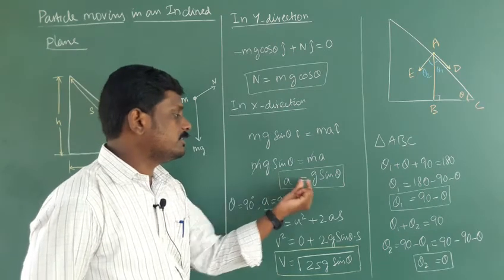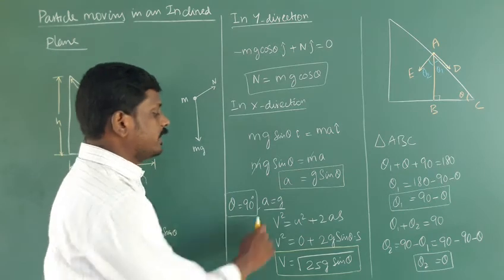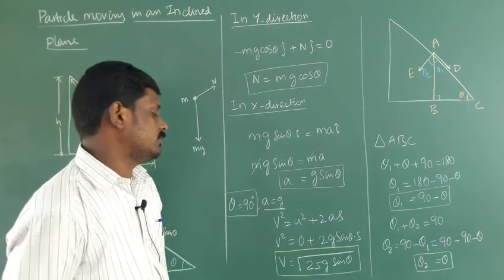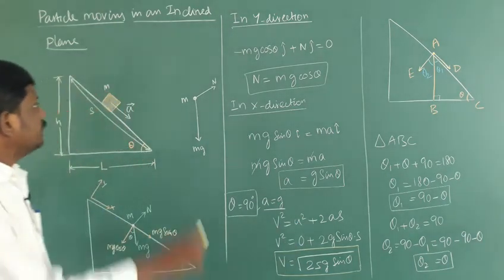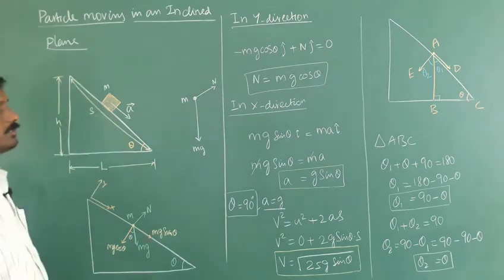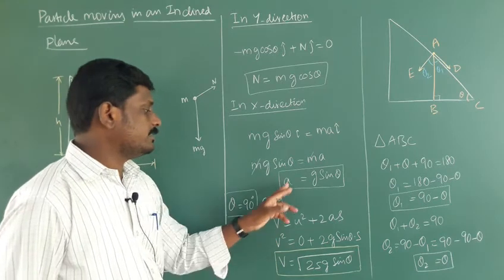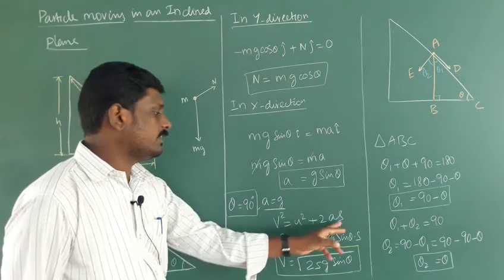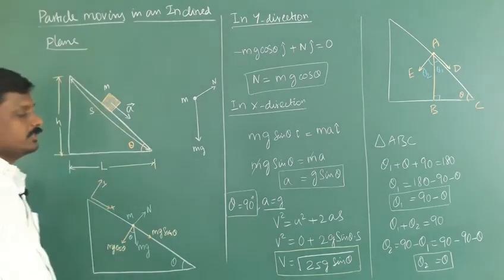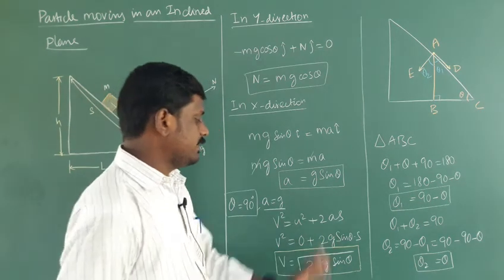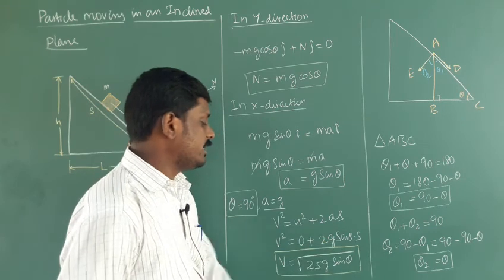If theta equals 90 degrees, then sine 90 equals 1, so a equals g. Using the kinematic equation v squared equals u squared plus 2as, the initial velocity u is zero and a equals g sine theta, so v squared equals 2 g s sine theta, where s is the total displacement along the inclined plane.